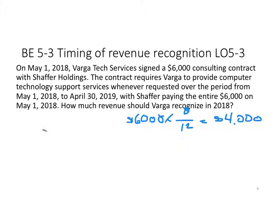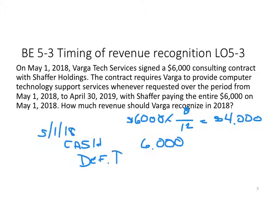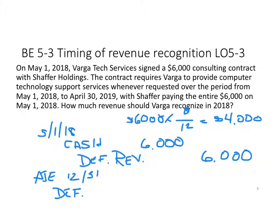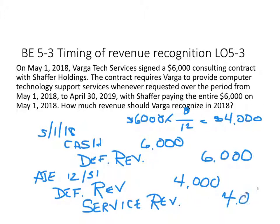The journal entries are not required, but on May 1, 2018, Varga would record the cash received and, doing things the conceptually correct way, would record a liability for deferred revenue. Then, assuming they do an adjusting journal entry at year end, at December 31, 2018, they would reduce the balance in the deferred revenue account and recognize service revenue for the eight months they have earned. That's really what we saw in Chapter 2 — we're now putting it in the context of the requirements for revenue recognition.